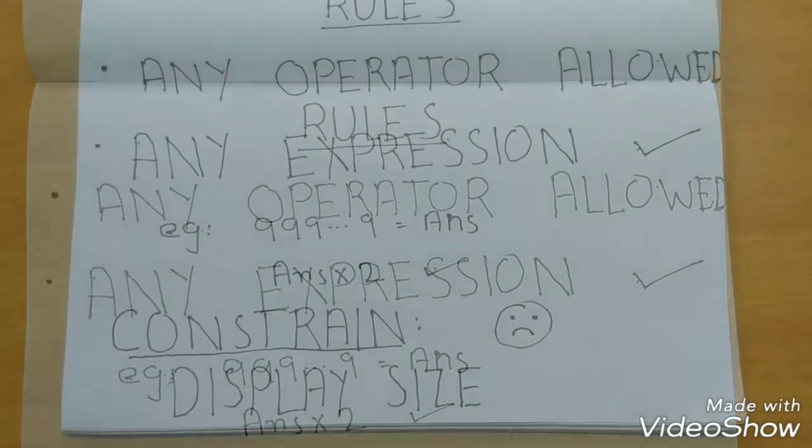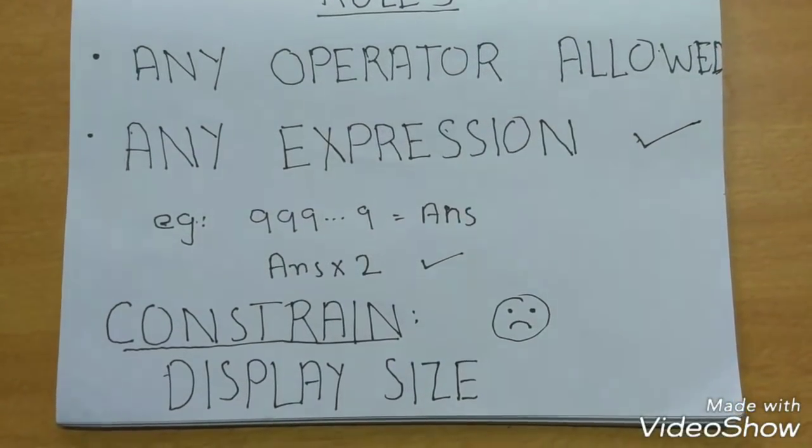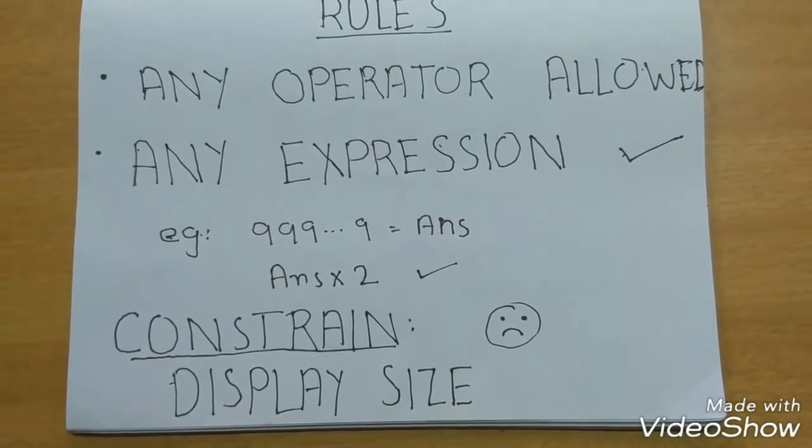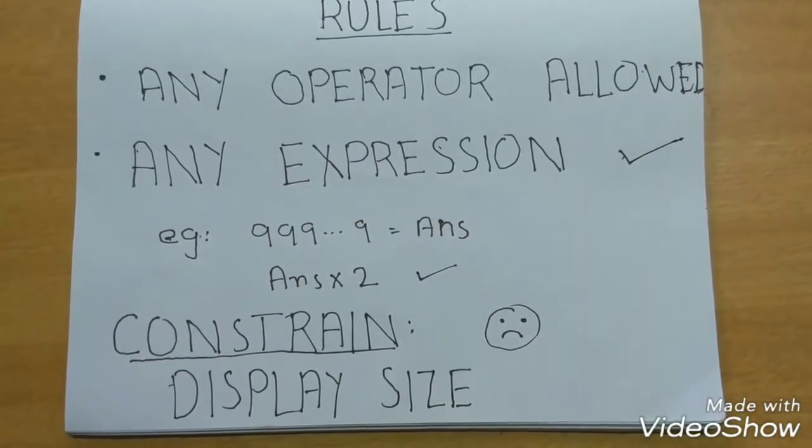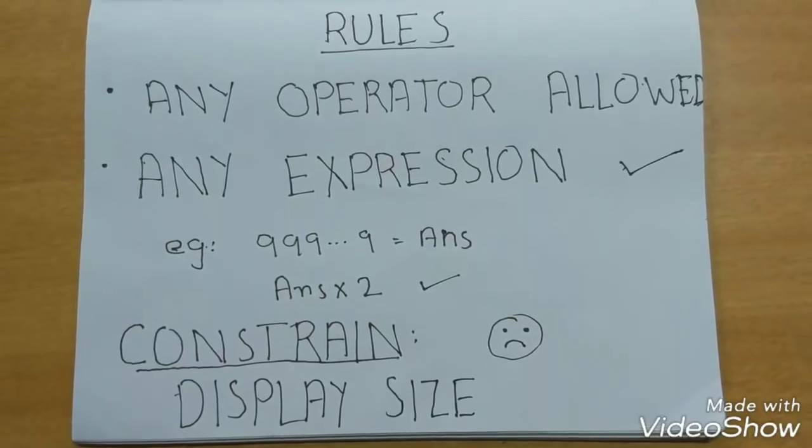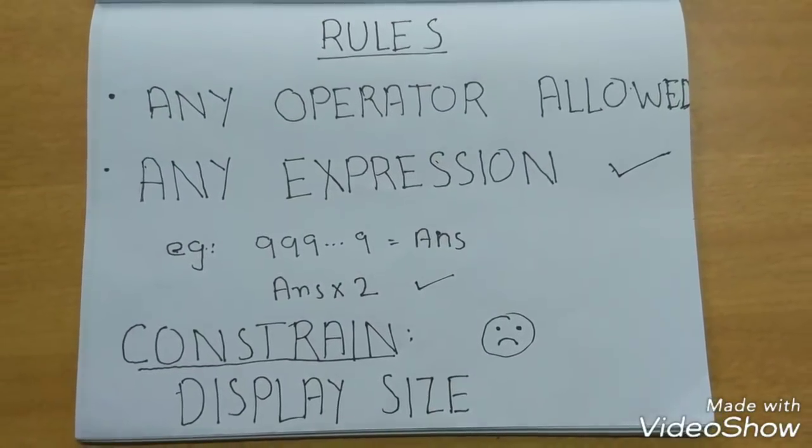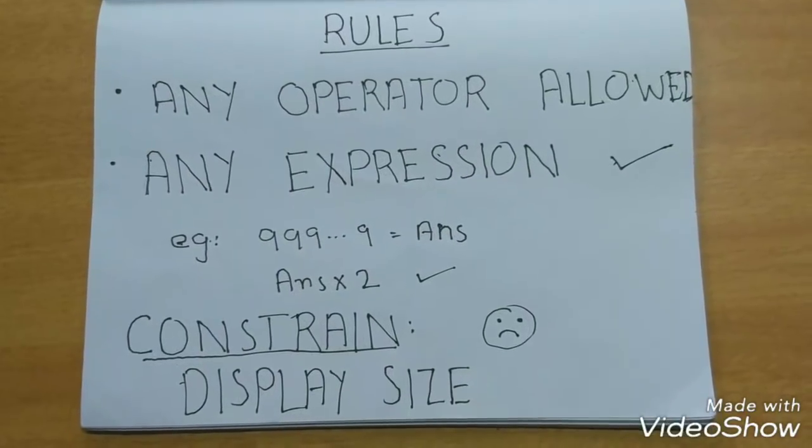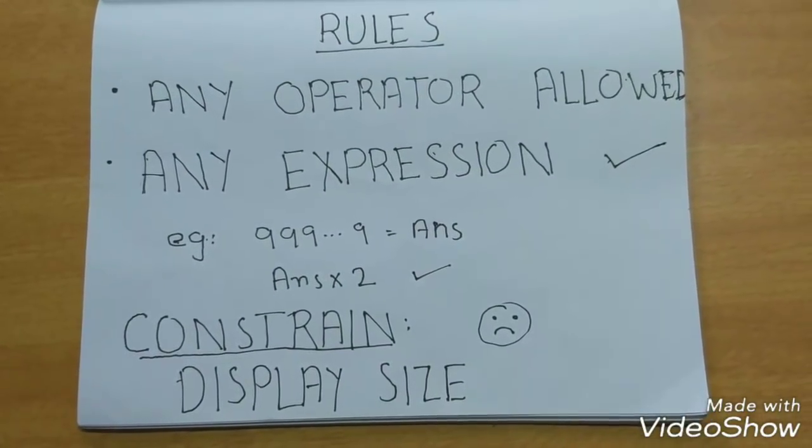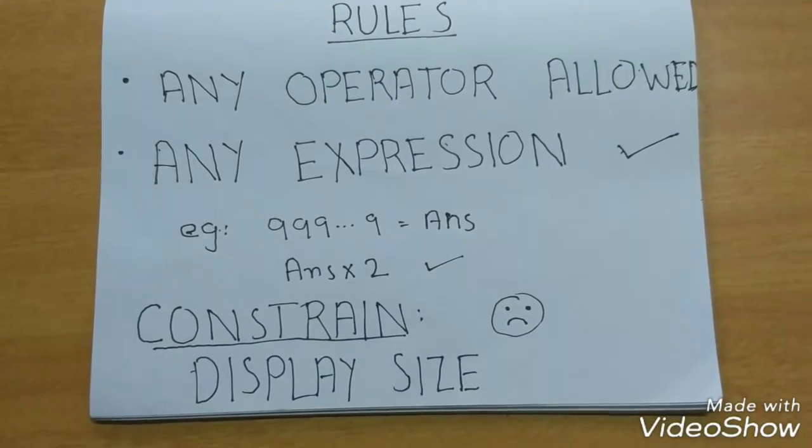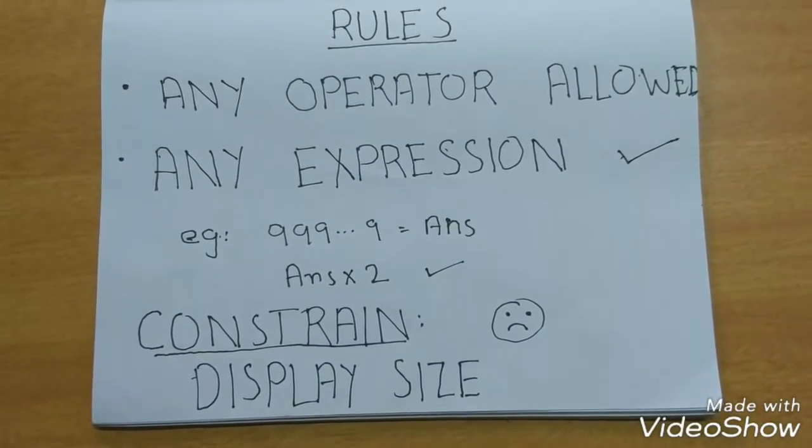The only constraint to this puzzle is display size of your calculator. Some calculators can display up to 79 digits and some scientific calculators can display more. The length of the number or expression which is written on the calculator is only constrained by the display size.